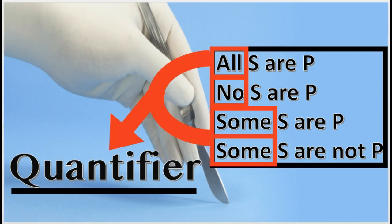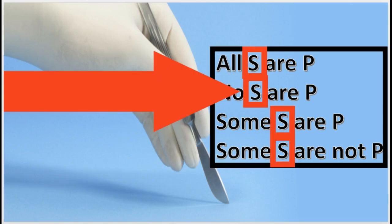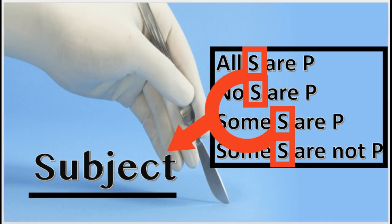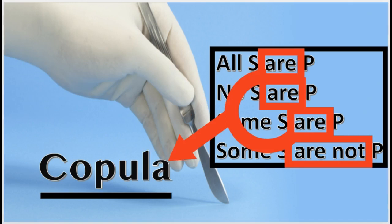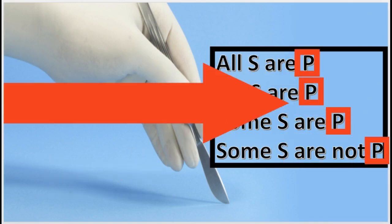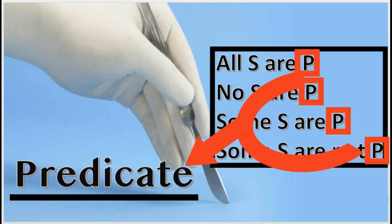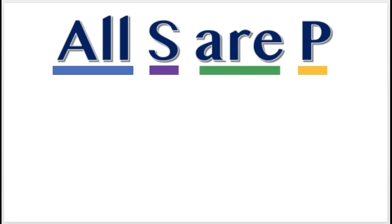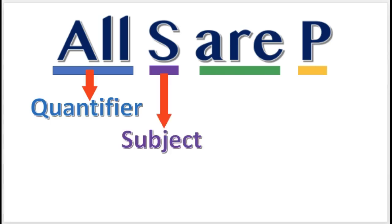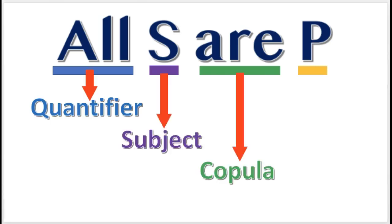Notice they identify a quantity — how many? Next, the letter S stands for the subject term. After that, the words are and are not, which are called the copula. And finally, the letter P stands for the predicate term. The categorical proposition can be dissected into these four parts: the quantifier, the subject, the copula, and the predicate.